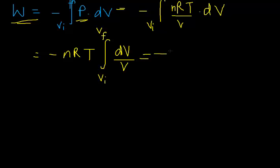This can be written as minus nRT. The integral of dV upon V is natural log or ln V. This can be written as ln V, limits from V initial to V final.